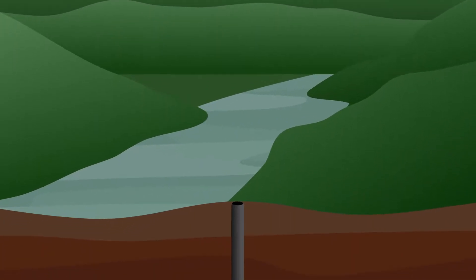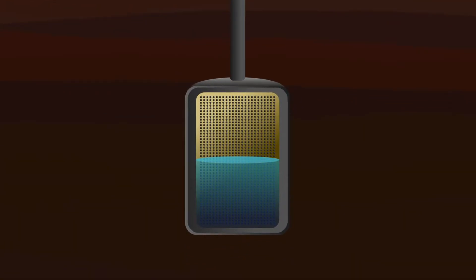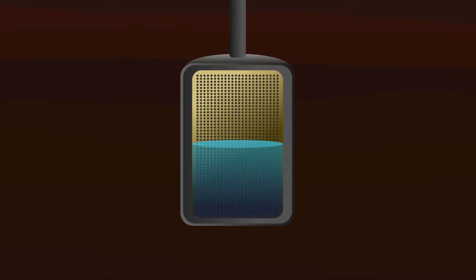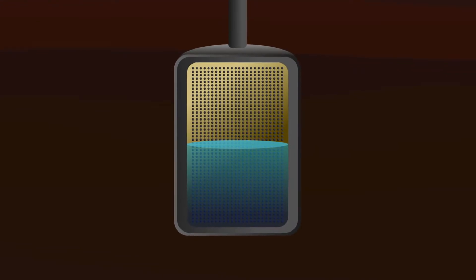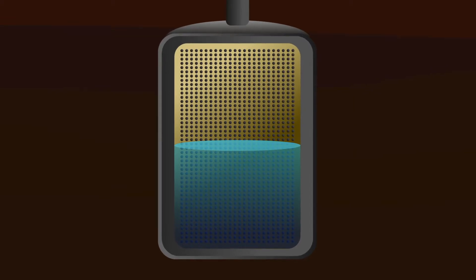Returning now to Super K, we see that this observatory is many generations more advanced than the first detector built in the 50s, though it has many similarities, with its large tank of water buried underground and surrounded by photomultiplier tubes. And while its scale is much, much larger, it also detects neutrinos through a different type of radiation called Cherenkov radiation.